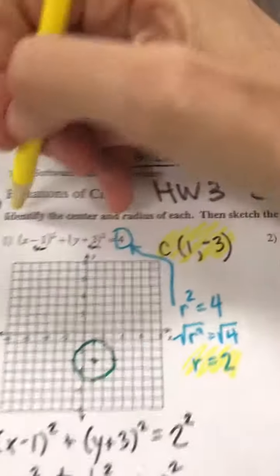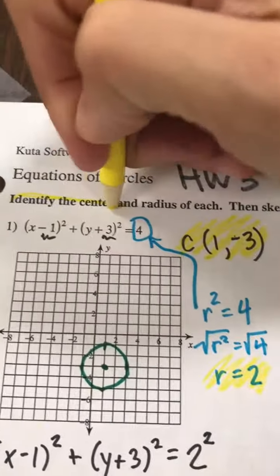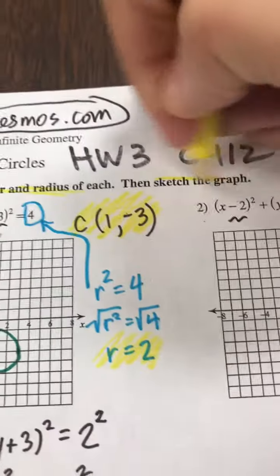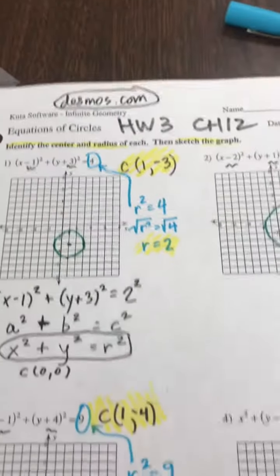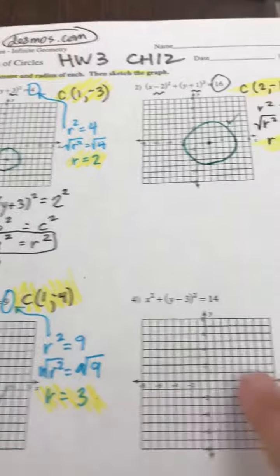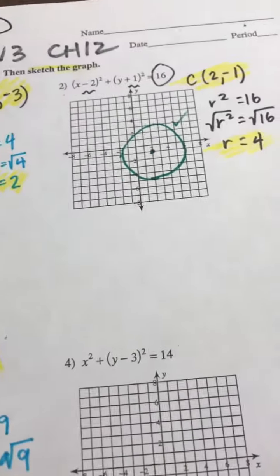That's what the directions say. It said identify the center and the radius, then sketch it. So make sure for full points you're listing that. Last one here on the front.